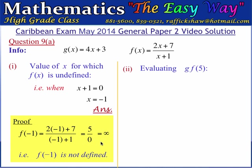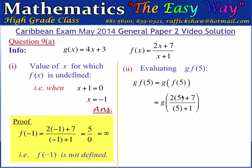Part 2 wants us to evaluate g of f of 5. g of f of 5 can also be written as g composed with f of 5, so we must calculate f of 5 first. f of 5 is obtained by substituting 5 for x in the f of x function: 2 times 5 plus 7 divided by 5 plus 1, which reduces to 17 divided by 6.